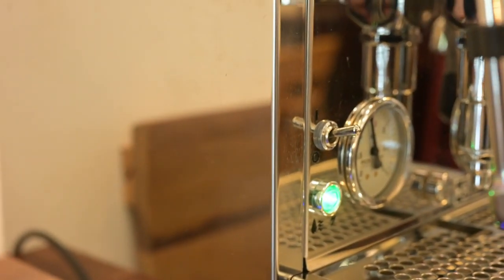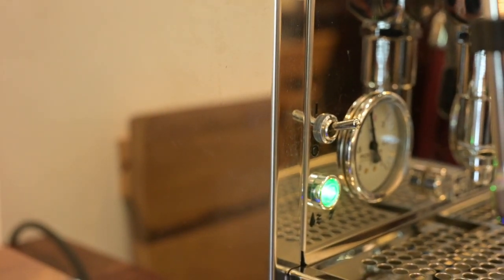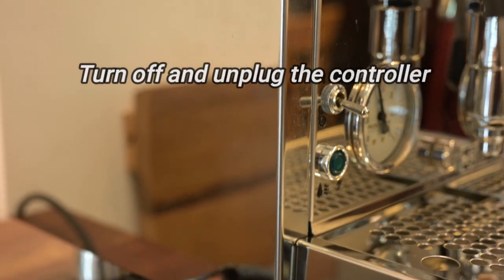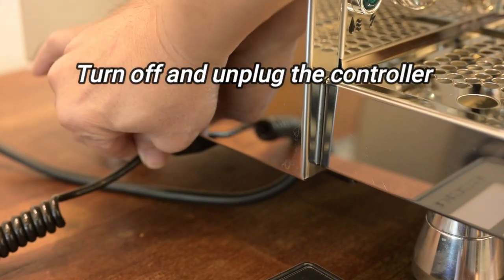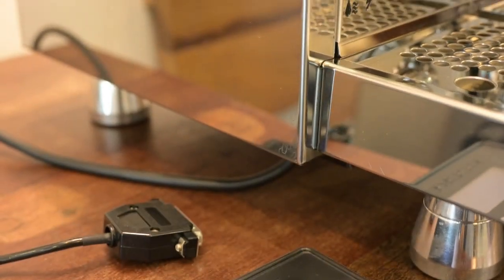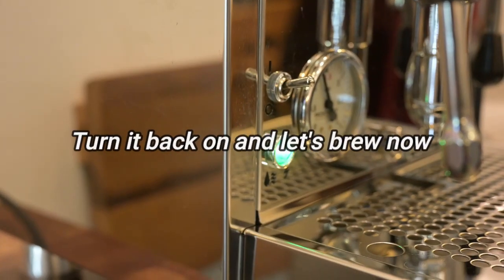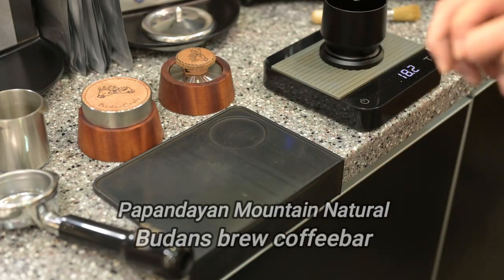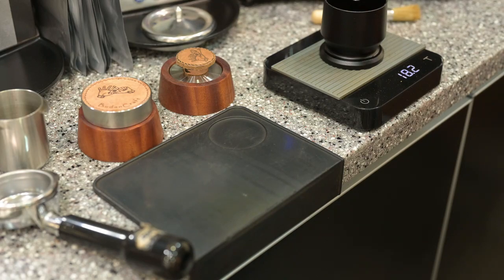All right, I'm just gonna turn it off and then I pull this one out. Okay, turn it back on. That's how we do it. All right, I'm using 18.2 grams of Papandayan Natural, triple pick grade number one.